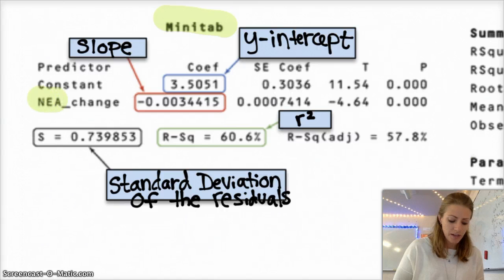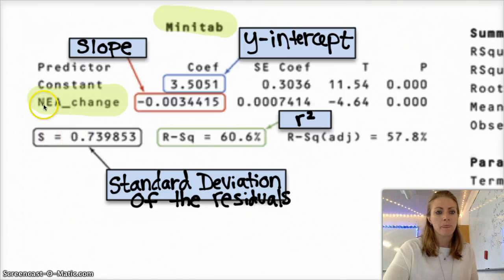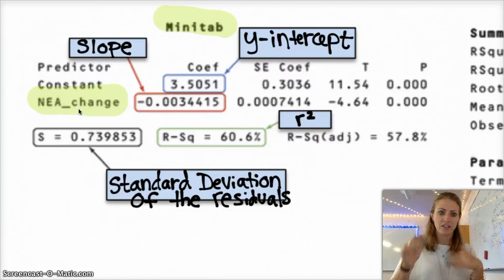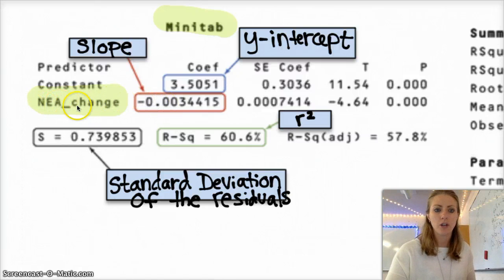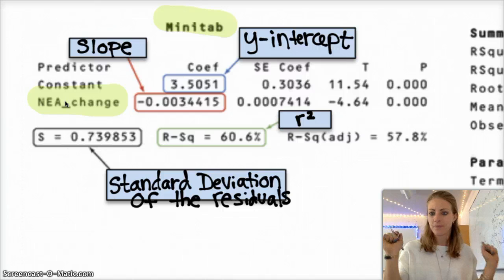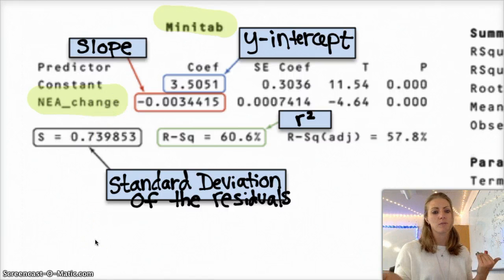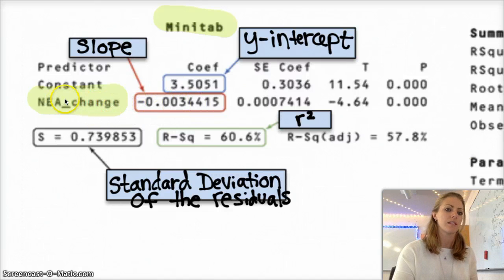the NEA change, so I'm not sure if we went over this problem, this context, but it's like measuring how much you wiggle like your non, like the little, like fidgeting and like twirling pencils and stuff, like how many calories that burns. And so the term that's in front of the slope is the x variable, the independent variable. So I like to think of it as negative 0.00344 times NEA change equals whatever, you know, whatever your y-variable is, obviously plus your y-intercept. And so if it's not clear from the example which one's the explanatory variable and which one's the response variable, this is kind of a good way to tell. So this is always, like, this is the variable that's attached to the slope, which is the x variable.